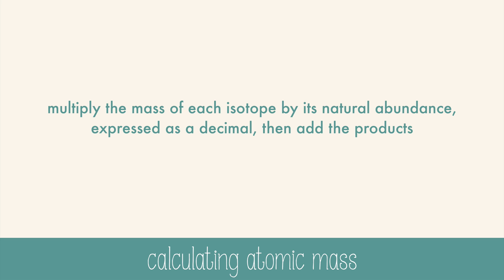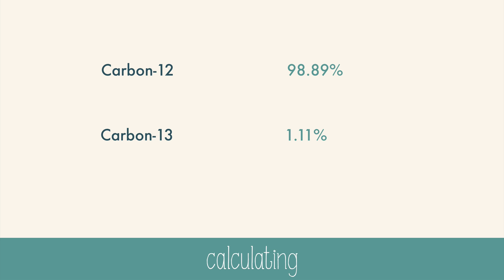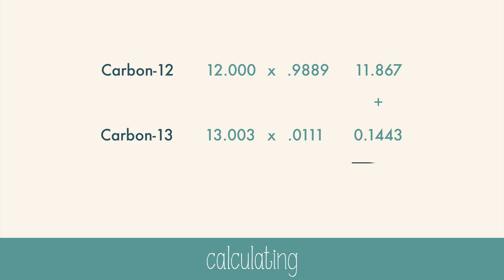Let's try an example using carbon-12 and carbon-13. Carbon-12 is exactly 12 AMU, but carbon-13 is 13.003. Use a chart to look up the masses of these isotopes. Then convert their abundance percentages into decimals by moving the decimal point two places to the left. Now we can multiply, and then we add up the products and get our final answer, which is the same number on the periodic table for atomic mass. For carbon, that's 12.011 AMU.